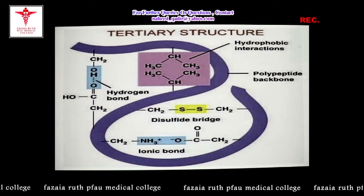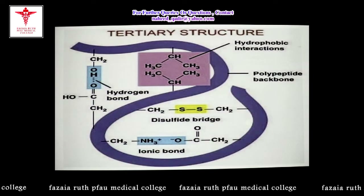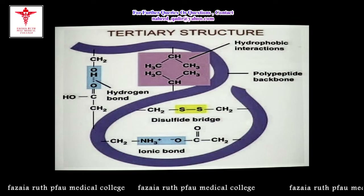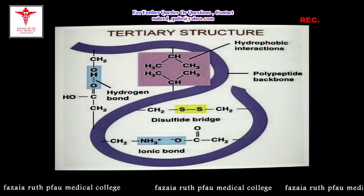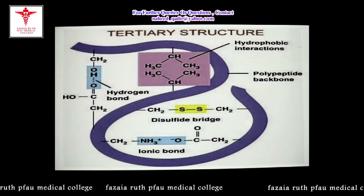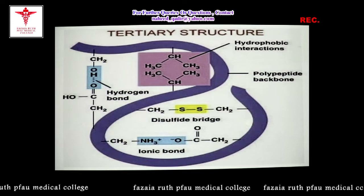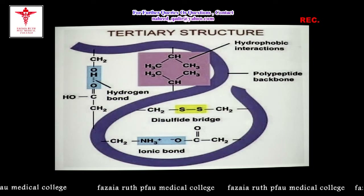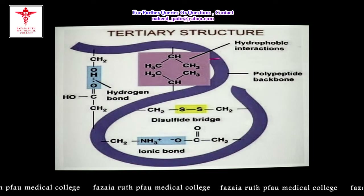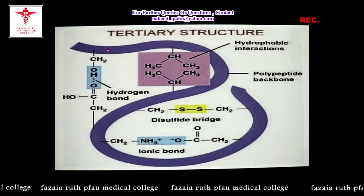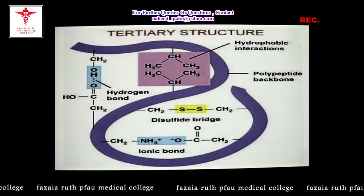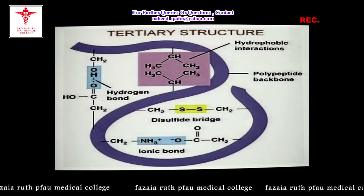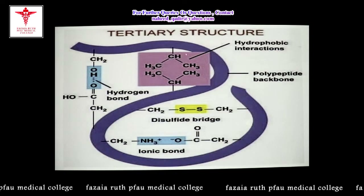The tertiary structure of protein involves a single polypeptide chain undergoing complete three-dimensional folding. It is a compact, functional conformation. In the primary structure we have only the peptide bond; in the secondary structure we have the hydrogen bond; but in the tertiary structure, other non-covalent bonds also participate in stabilization. When different amino acids come into contact with each other, they form different types of non-covalent bonds.